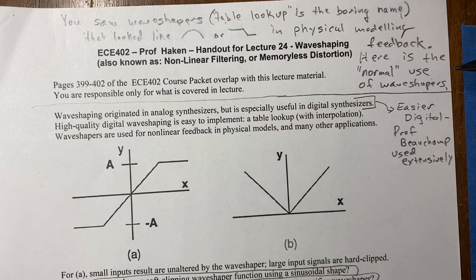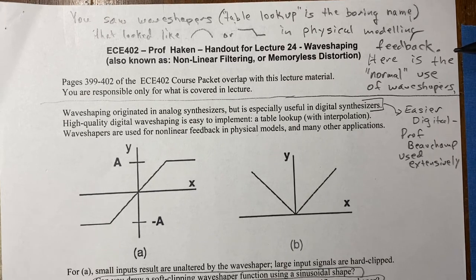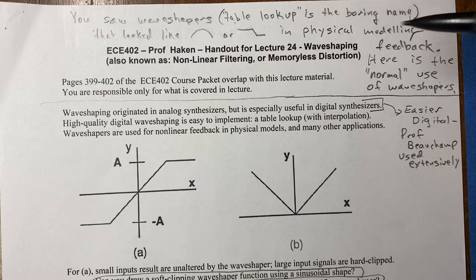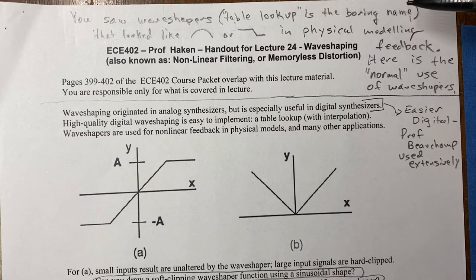Wave shaping has its beginnings in analog synthesizers, where you could do various non-linear distortions. But it's actually fairly well suited to digital because it's so easy to do a table lookup — it's hard to do an arbitrary function in analog. And even in the Eigen matrix where you usually evaluate a digital summation formula rather than use table lookups, it's still a very straightforward implementation.